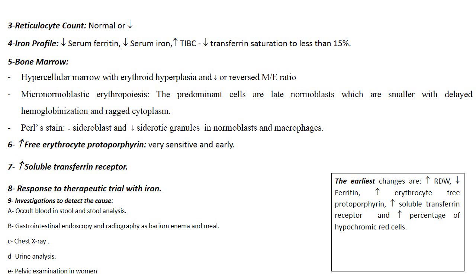When a patient is diagnosed with iron deficiency anemia, you must search for the cause, as anemia is a sign and not a disease. Iron deficiency anemia most commonly results from chronic bleeding, which means investigations such as GIT endoscopy, occult blood in stool, chest X-ray, urinalysis, and pelvic investigations in women are indicated.